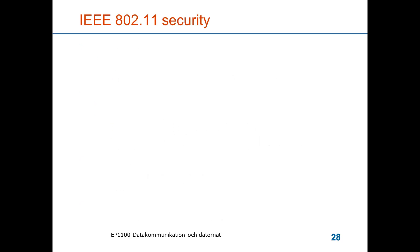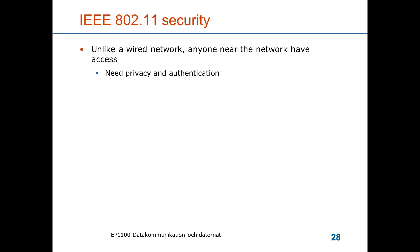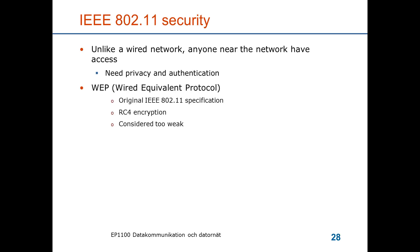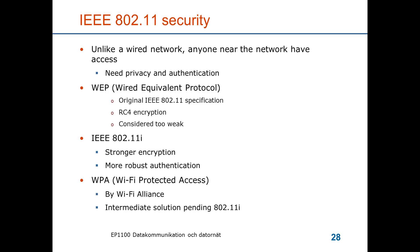In a wired network, eavesdropping requires physical connection to a switch, but in a wireless network anyone nearby can listen, so privacy and authentication are needed. The first proposal was called Wired Equivalent Privacy, an 802.11 specification, but it was considered too weak. What's mostly used now is WPA, Wi-Fi Protected Access, developed by the Wi-Fi Alliance, which is also moving into the 802.11i standard with stronger encryption and more robust authentication.